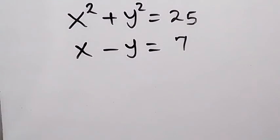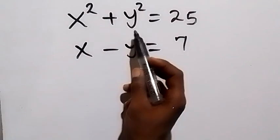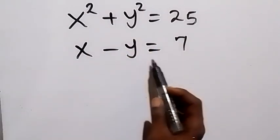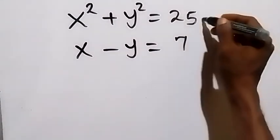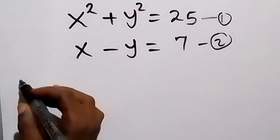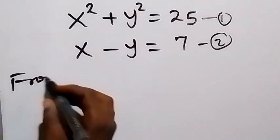Hello, you are welcome. How to solve this problem: x squared plus y squared equals 25, and x minus y equals 7. Let's label this as equation 1 and this as equation 2.